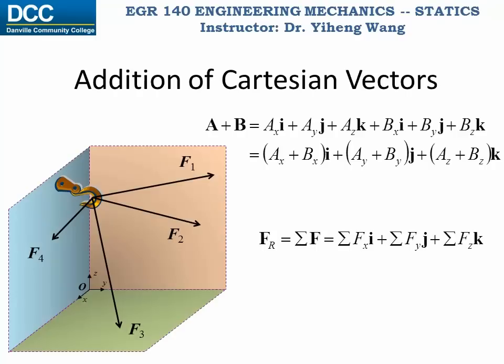Therefore, when you perform Cartesian vector addition or subtraction, all you need to do is sum the i, j, and k components of the vectors up separately, and those will become the new i, j, and k components of the resultant vector.